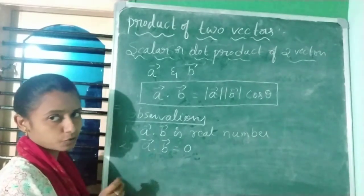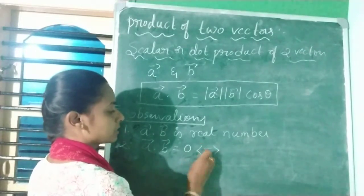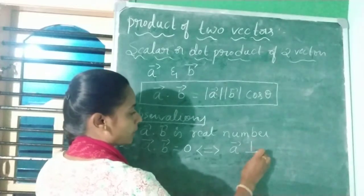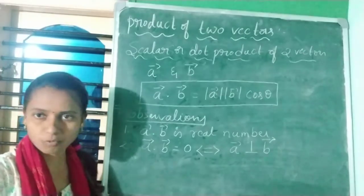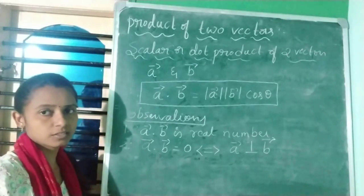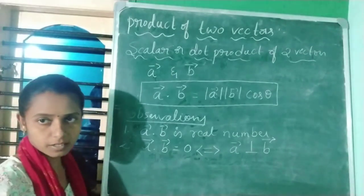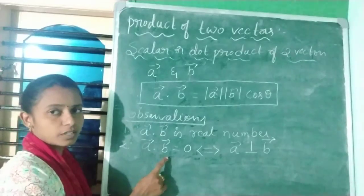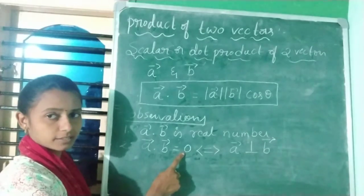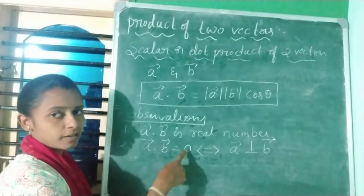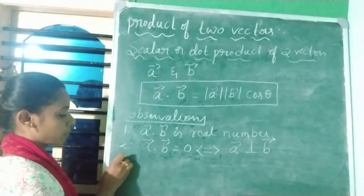if the dot product of two vectors is zero, then if and only if vector a is perpendicular to vector b. This is an important observation. In problems where you need to show two vectors are perpendicular, you compute the dot product — if the result is zero, you conclude the two vectors are perpendicular to each other.